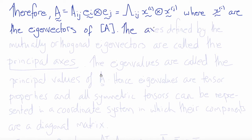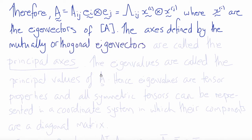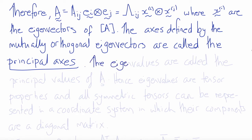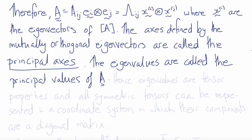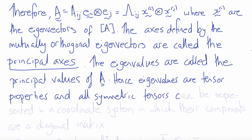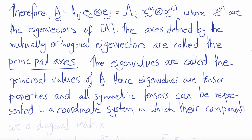So that suggests that for any symmetric tensor, we can always find a frame of reference in which the off-diagonal components go to zero, leaving only the diagonal components, which are the eigenvalues. That frame of reference is defined by the three mutually orthogonal eigenvectors which define the principal axes. The eigenvalues along the diagonal of the tensor in this frame of reference are called the principal values. Hence, for symmetric tensors, we can think of eigenvalues as properties of the tensor, not merely properties of a specific matrix, and all symmetric tensors can be represented in a coordinate system in which their components form a diagonal matrix.